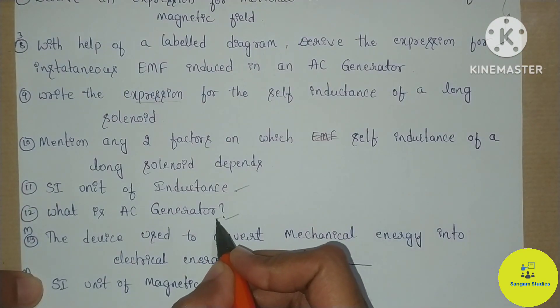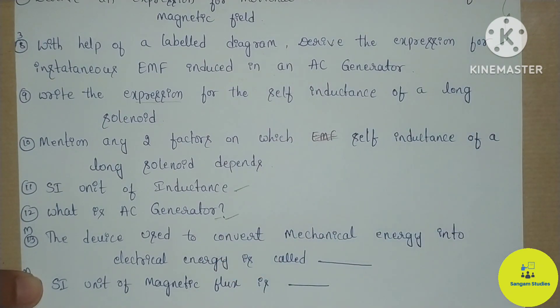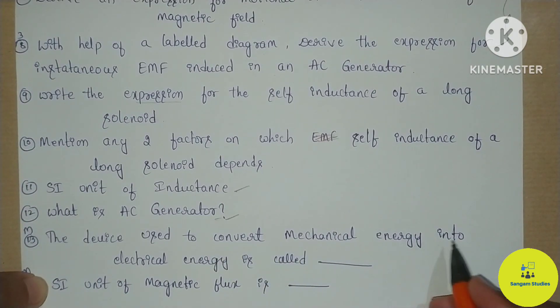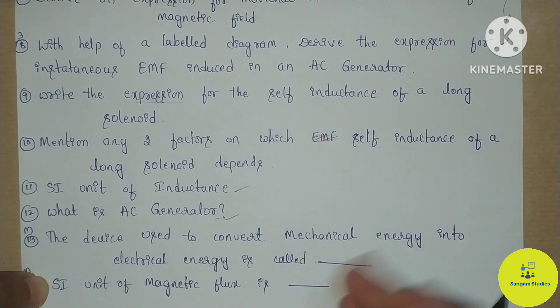See the AC generator definition in this model question paper in fill-in-the-blanks: the device used to convert mechanical energy into electrical energy is called dash — direct or AC generator. The definition is dash.